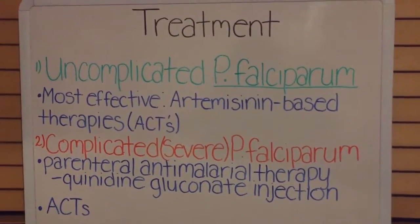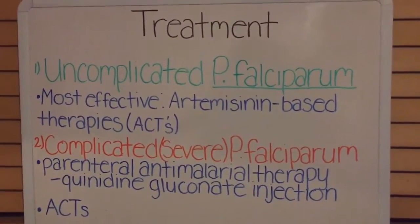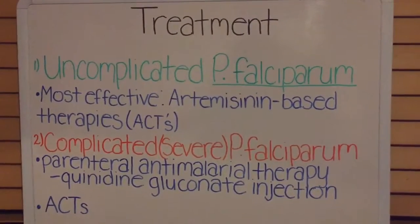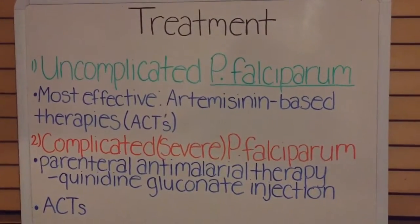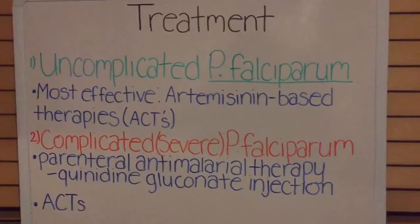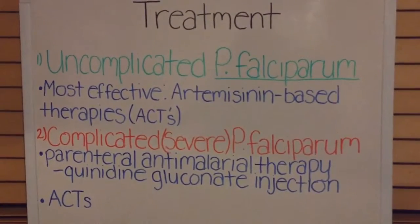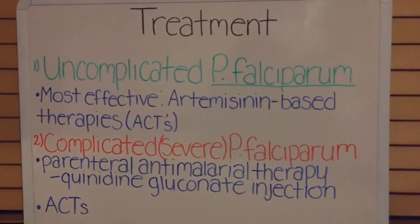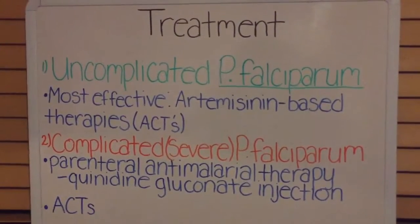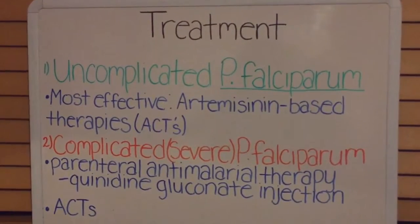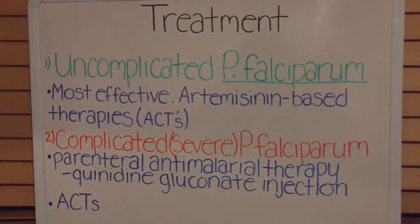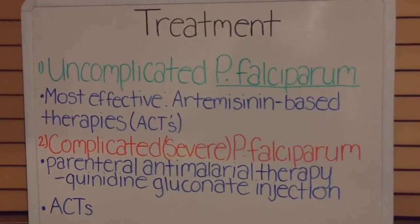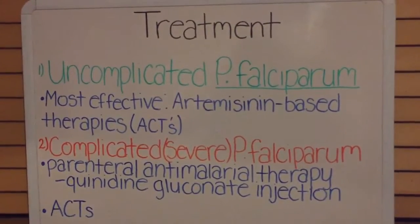Treatments. Treatment of malaria depends on many factors such as the type of species of the infecting parasite, the area where the infection was acquired and its drug-resistant status, the clinical status of the patient, any recent illness or condition the patient may have, pregnancy, and drug allergies or other medications taken by the patient. There are many drugs for malaria, but the most effective drug for Plasmodium falciparum is the artemisinin-based combination therapies, also known as ACTs, which is a combination of artemisinin derivatives with a partner drug.